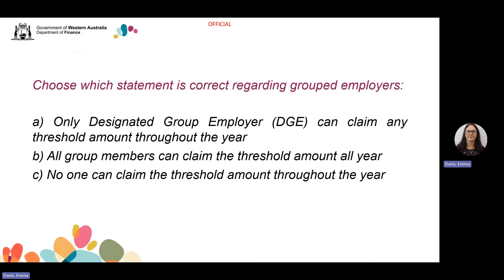Another quick recap question. Choose which statement is correct regarding grouped employers. The options are: A, only the designated group employer (DGE) can claim any threshold amount throughout the year; B, all group members can claim the threshold amount all year; or C, no one can claim the threshold amount throughout the year. The answer is A — only the designated group employer, the DGE, can claim any threshold amount throughout the year.